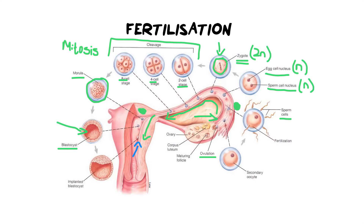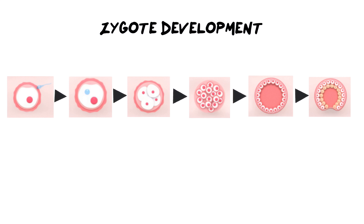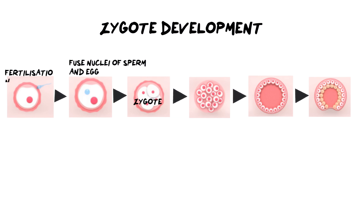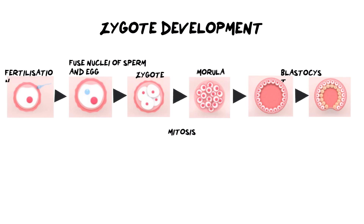Let me summarize with a very simple diagram. First we have an egg cell and a sperm cell that come together via fertilization, where the sperm cell uses its acrosome to burrow into the egg cell and the nuclei fuse. They are haploid cells fusing to make a diploid zygote. That zygote undergoes mitosis and produces a morula — a solid ball of cells — which continues undergoing mitosis to form a blastocyst, a hollow ball of cells.